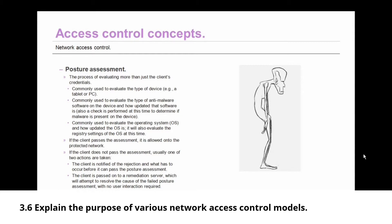The other action that is commonly taken when a device has failed the posture assessment is that it is passed on to a remediation server, which will then attempt to resolve the cause of the failed posture assessment. It will do this with no user interaction required. Once it has remediated the device and it can pass the assessment, it then goes through the process again and is allowed onto the network if it passes.